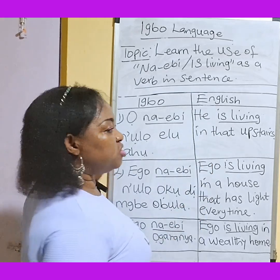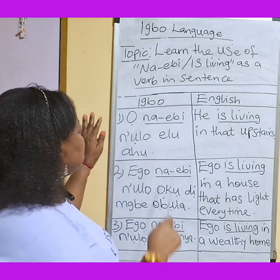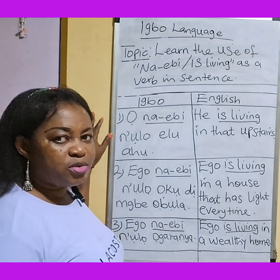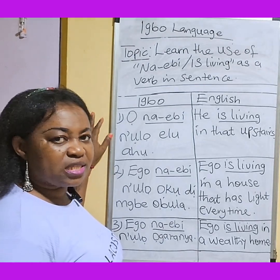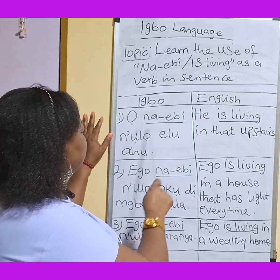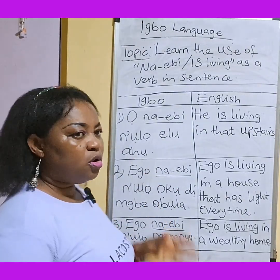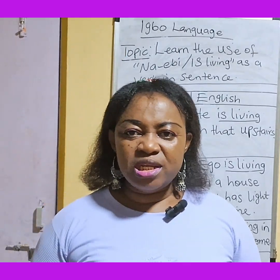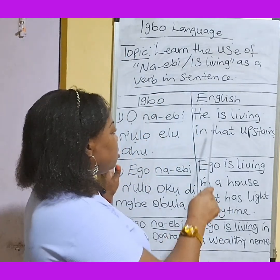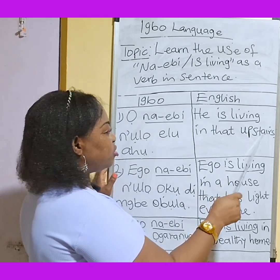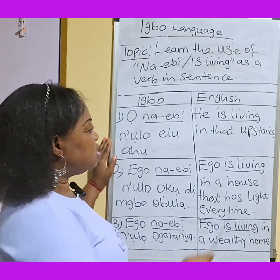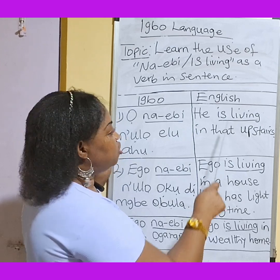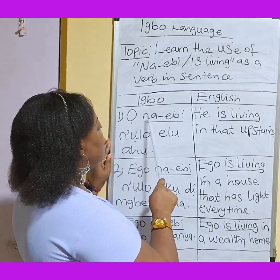In Igbo, number one sentence — the meaning is: he is living in that house. Is living is our verb. In Igbo, 'is living' means Nebi.